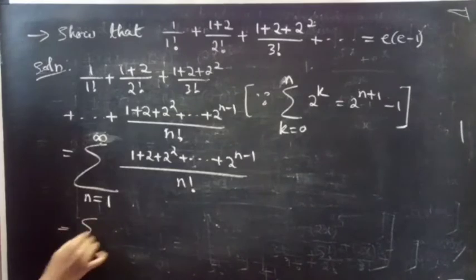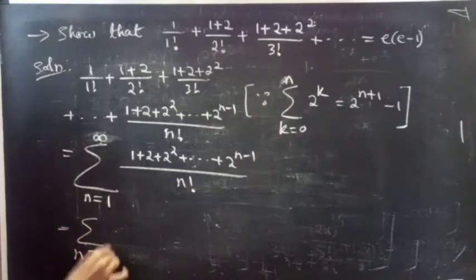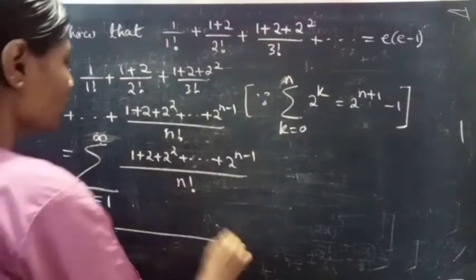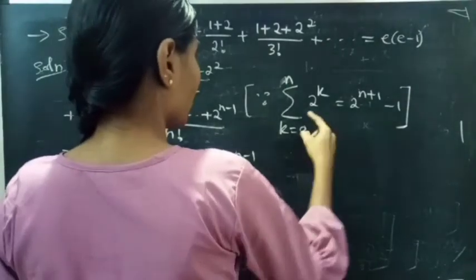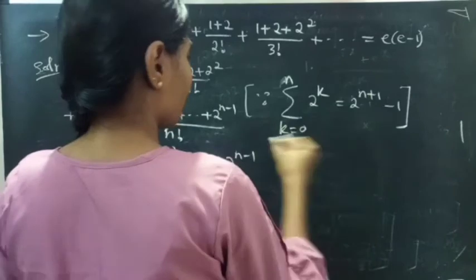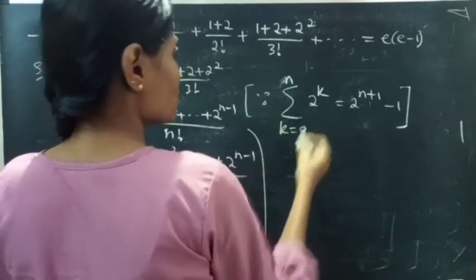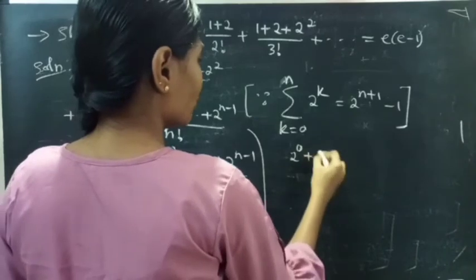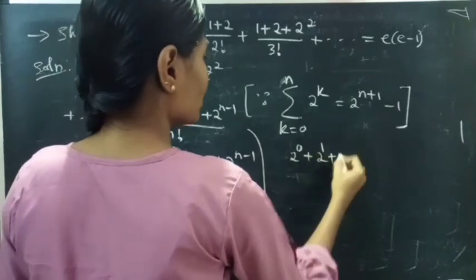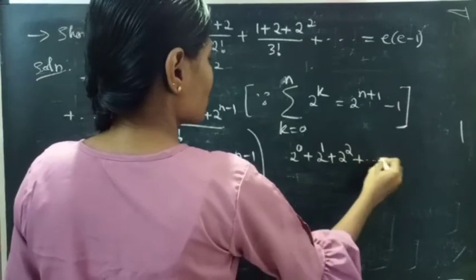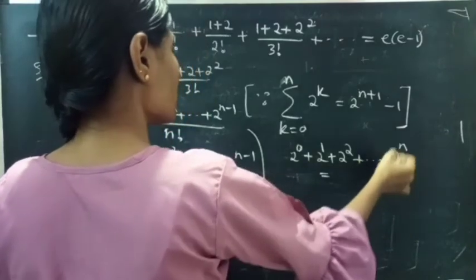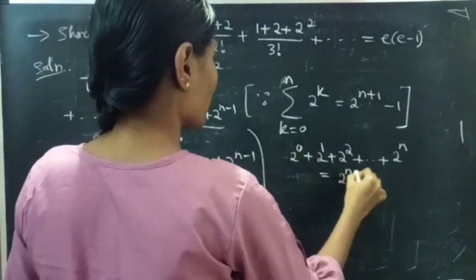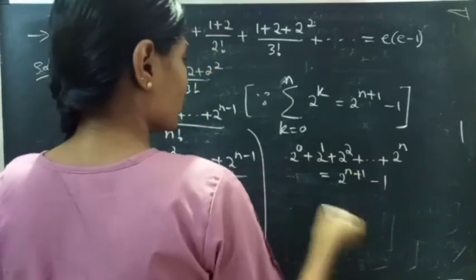This can be written as summation n equals to 1 to infinity. In the numerator, you are having the sum of powers of 2. Using the geometric sum formula, putting k equals to 0: 2 power 0 is 1, k equals to 1 is 2 power 1, then 2 squared, up to n terms. So the last term is 2 power n, and the sum equals to 2 power n plus 1 minus 1.